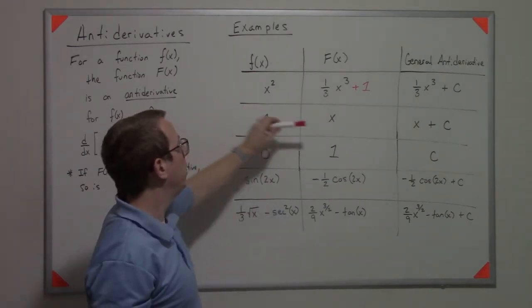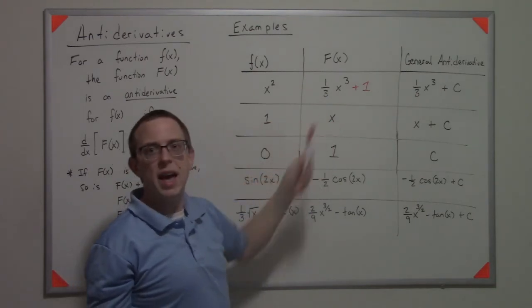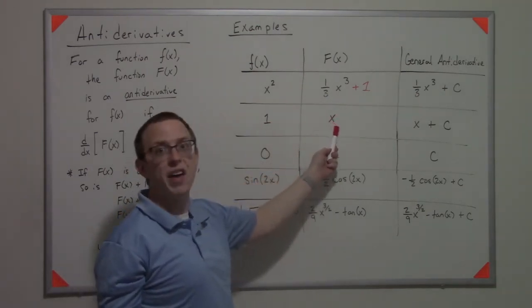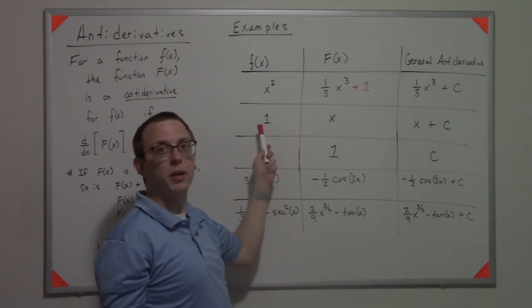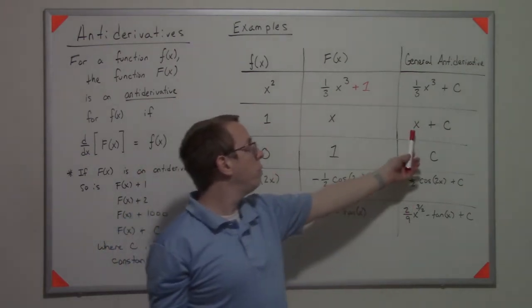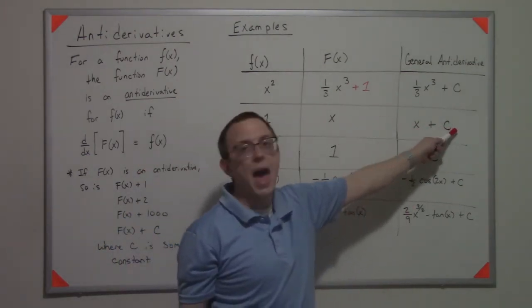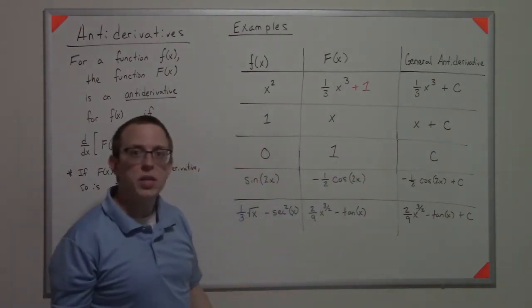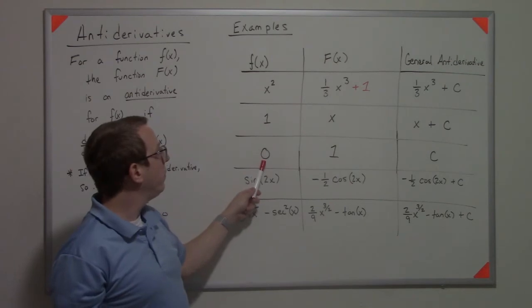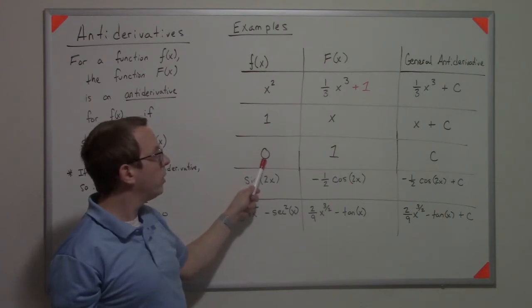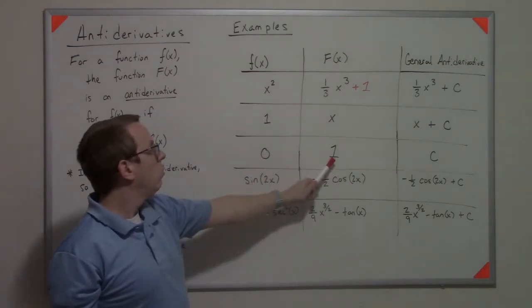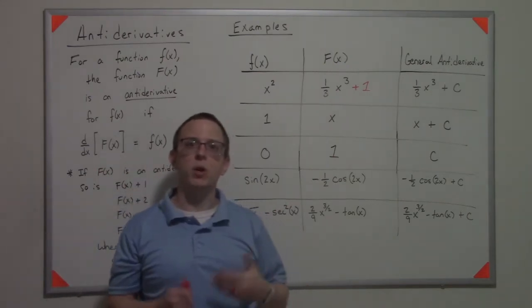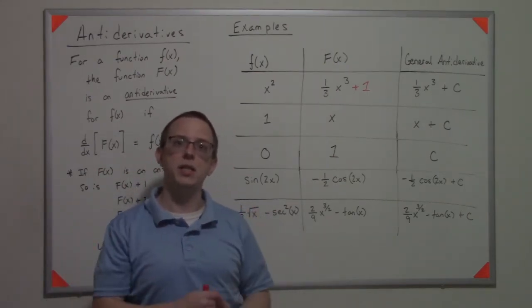The +C is part of the general antiderivative. If we start with f(x) = 1, then big F is x because the derivative of x is 1, and for the general antiderivative we just add a C to it. As an interesting case, if f(x) is 0, well then you might say big F is 1, right? Because the derivative of 1 is 0.